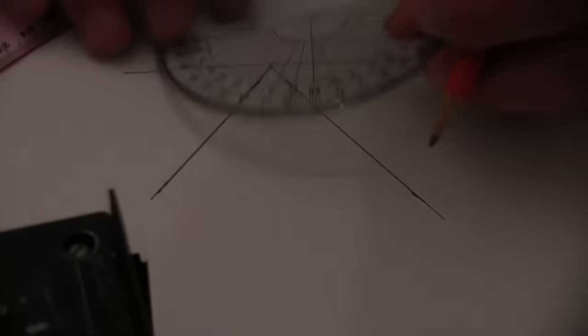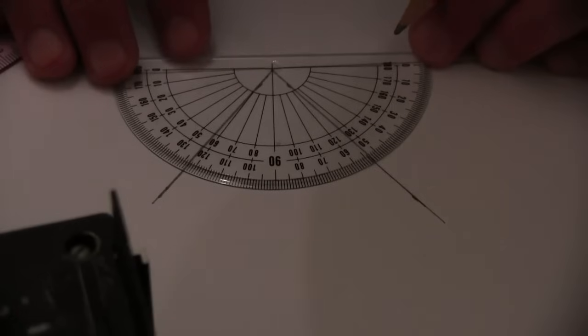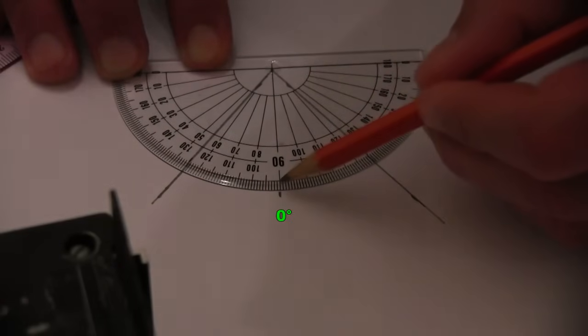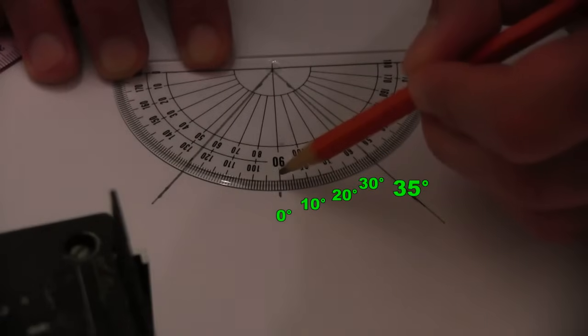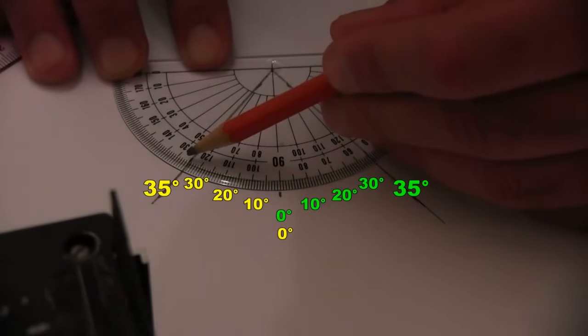You can now measure the angle of incidence and the angle of reflection with a protractor, which is best placed like this. The line marked 90 degrees on the protractor will be your 0 degrees, so in this case, the angle of reflection is 35 degrees, and the angle of incidence is also 35 degrees.